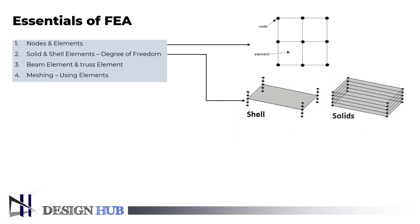What are solid and shell elements? A solid model is a common solid element in which every part of the component or structure has a consistent representation of the material. The interior of a shell, which serves as the outer shell, is hollow. Solids with unique shapes can mathematically be simplified into shells.